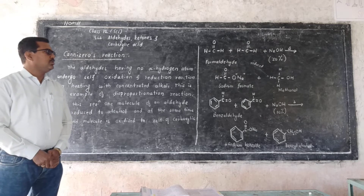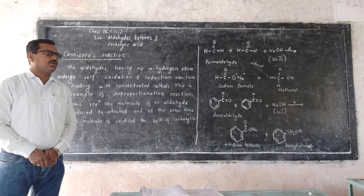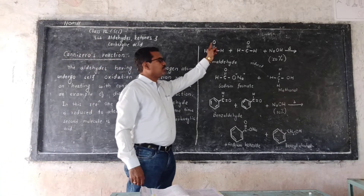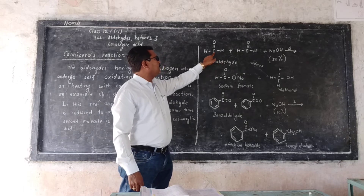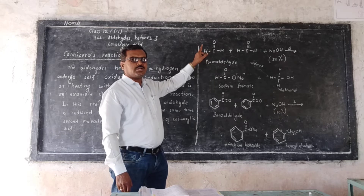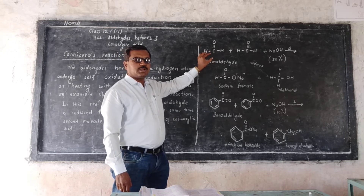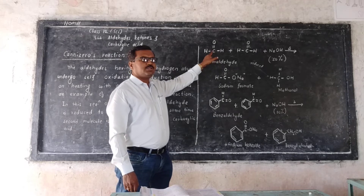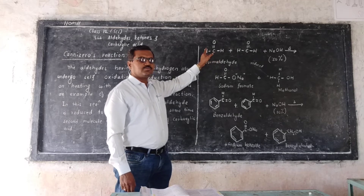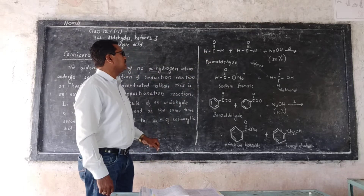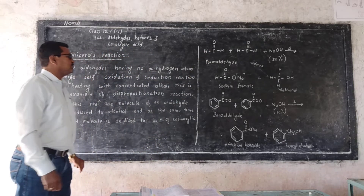So what is an alpha-hydrogen atom? In aldehydes, the functional group is CHO. After CHO, there is no carbon atom present. So the hydrogen atom which is attached to the carbon atom after the functional group, after the CHO group, is called the alpha-hydrogen atom.